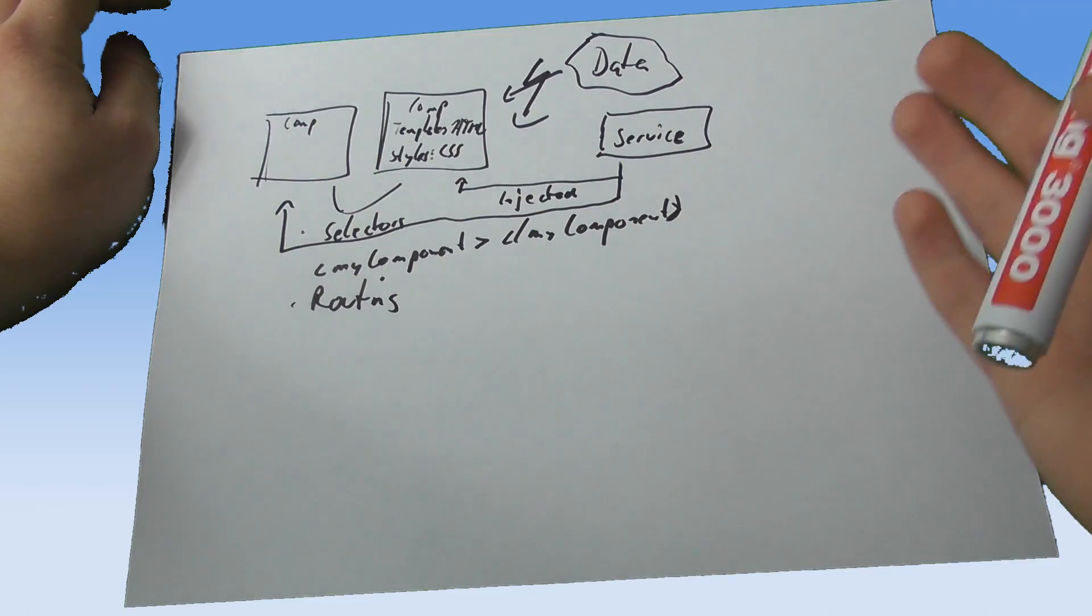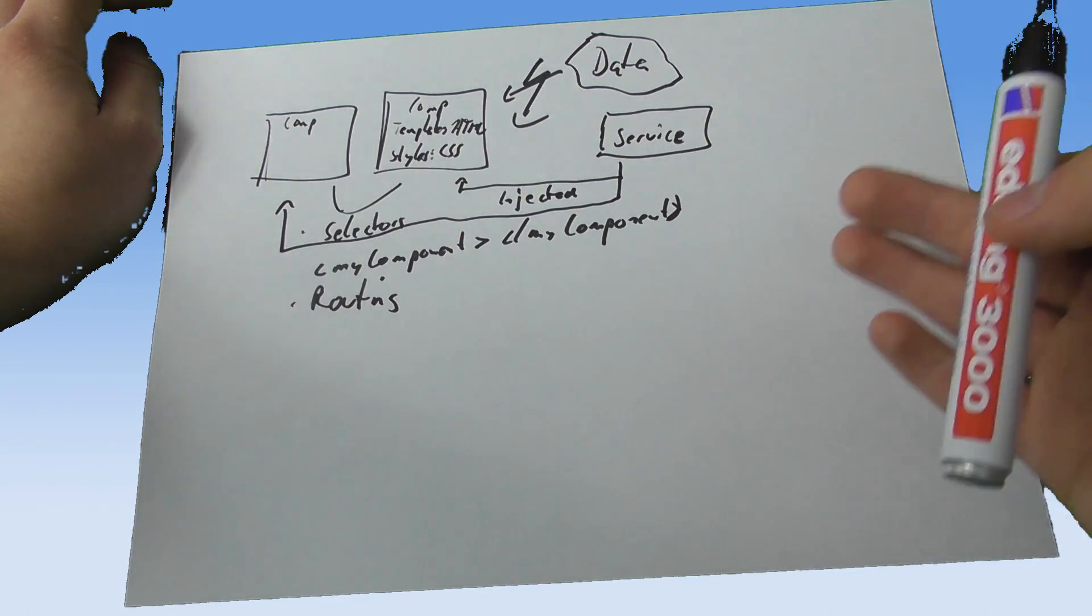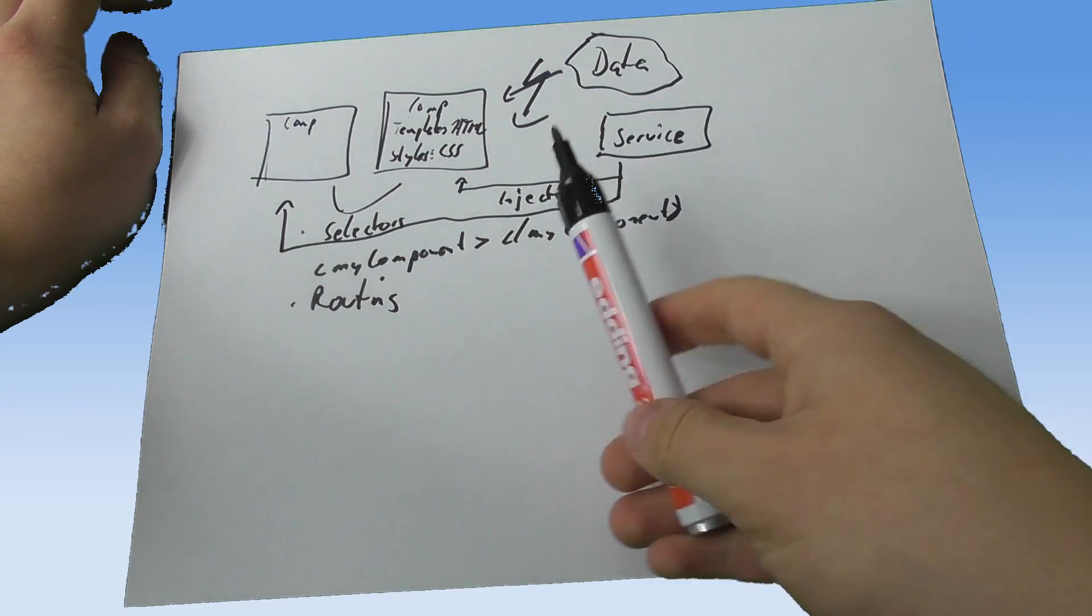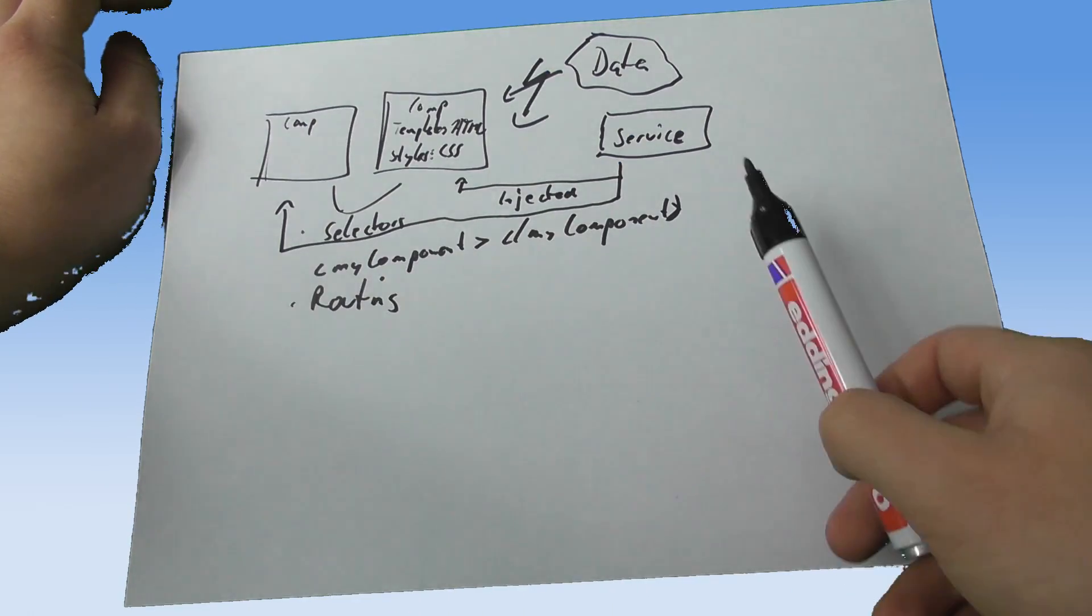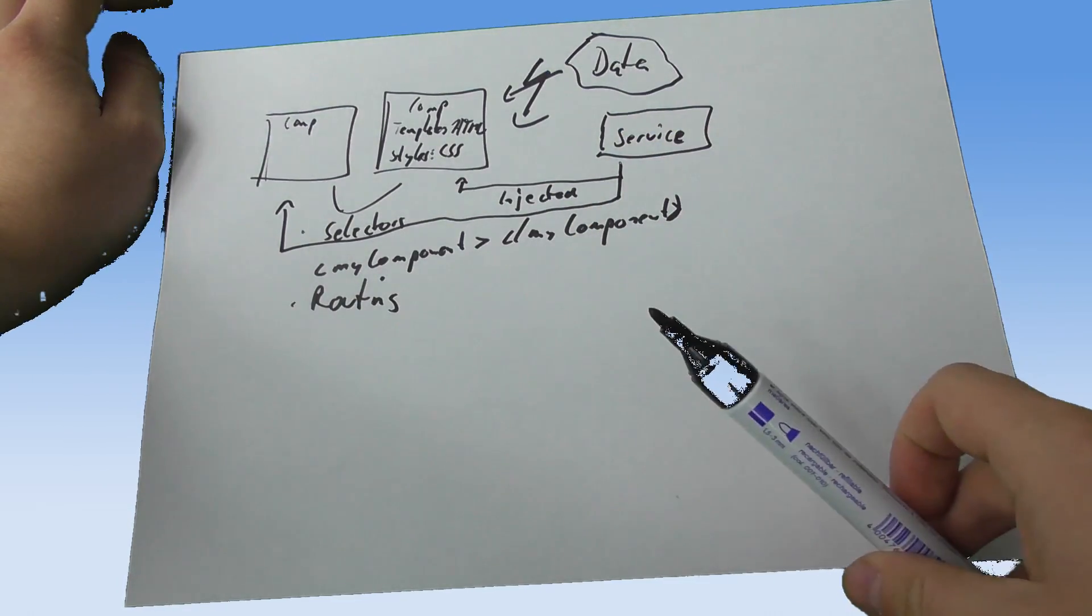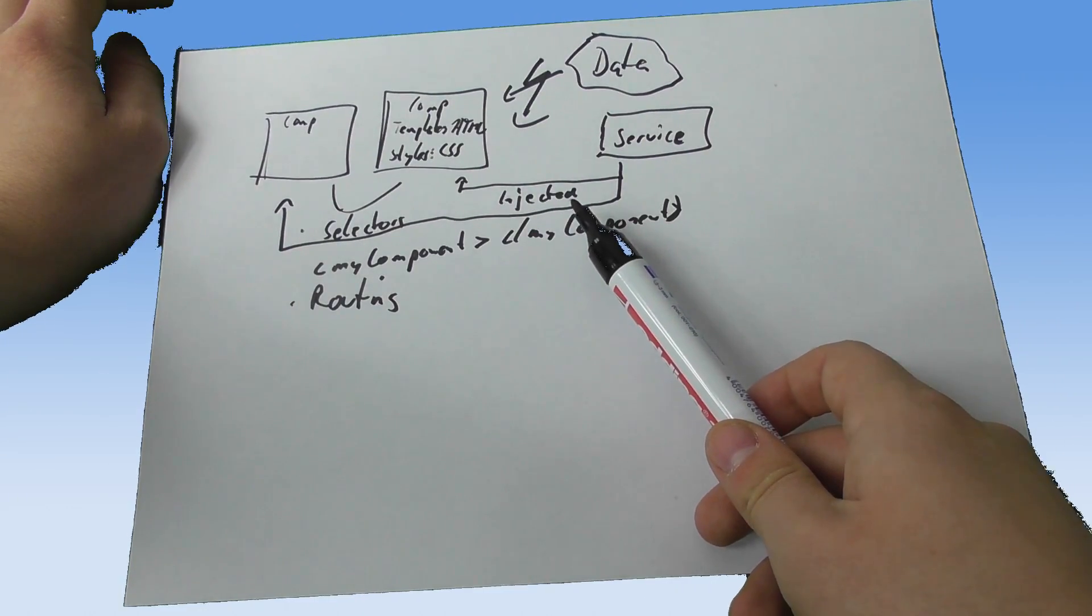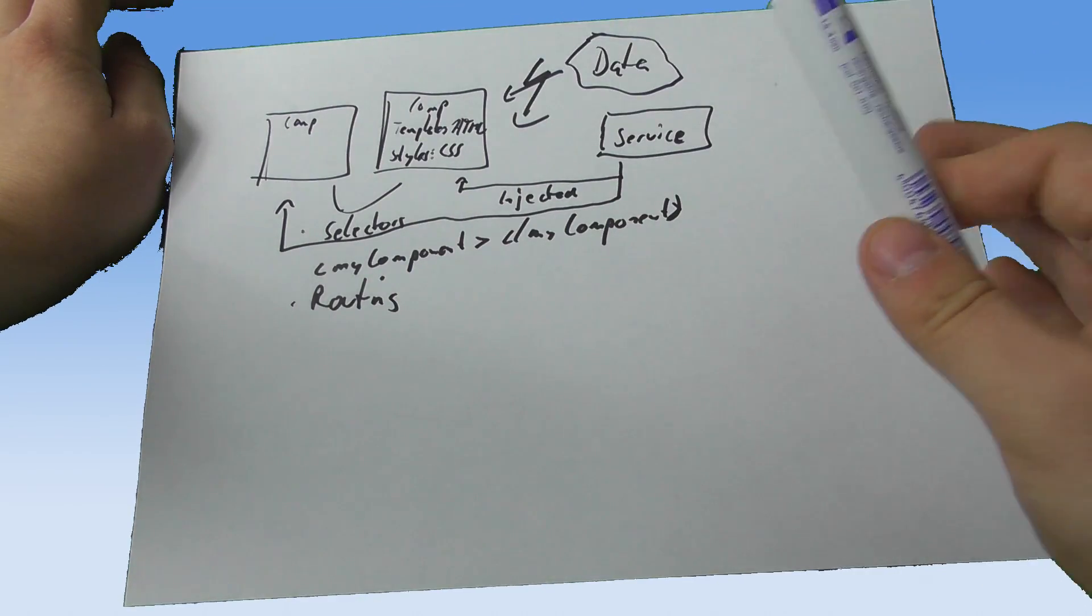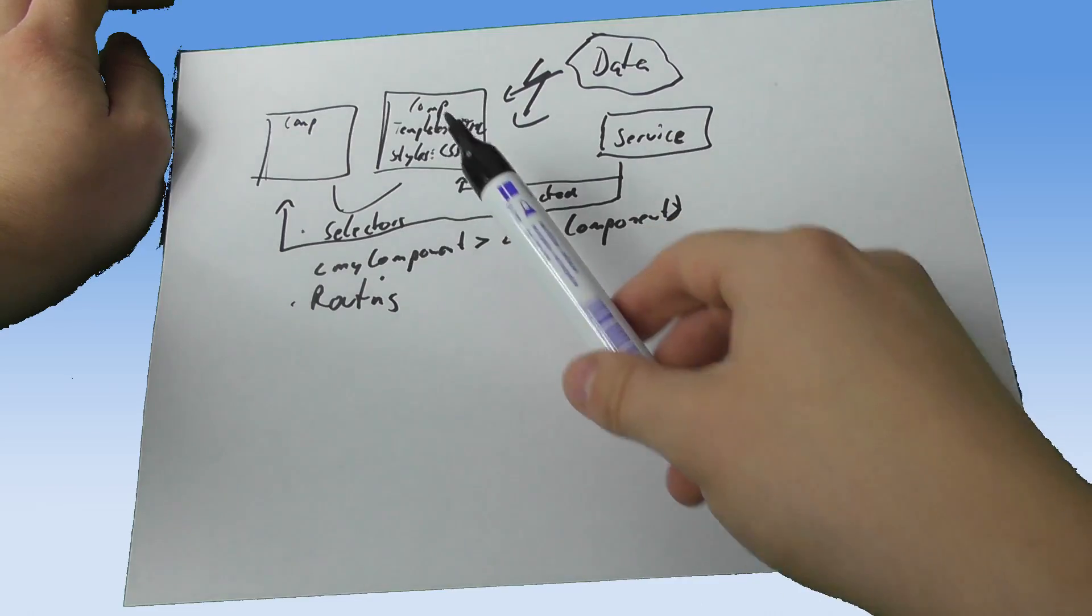Obviously services can not only be used to fetch data but to do all kinds of general calculations or fetching that is not specific to one component but may be used by several components and therefore has to be injected. Now don't worry if you're not sure what I mean by injected. I will explain it to you when we come to it, but it is very easy and is the way of transferring dependencies in Angular 2.